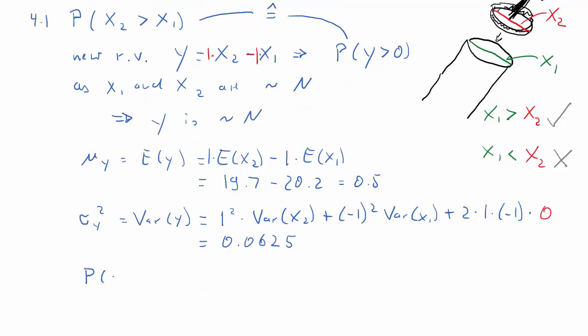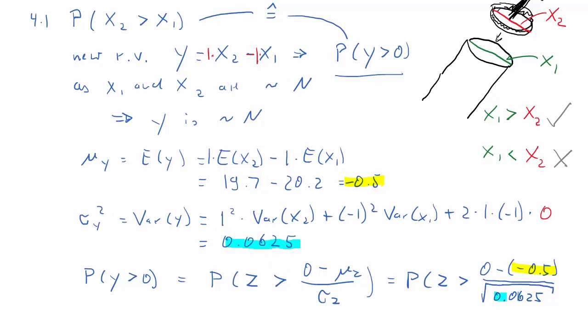So now, with that, we can proceed to calculate the probability that Y is larger than 0. Now, Y is a normal distribution, which is non-standard. That means we need to standardize it. 0, because that's the probability we want, minus the mean of Y, divided by the standard deviation. So we'll have the probability of Z larger than 0 minus minus 0.5, which is the expected value of Y, divided by the standard deviation, which is just the square root of the variance, and the variance is 0.0625.